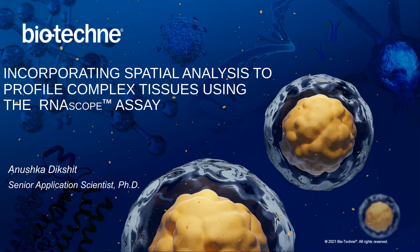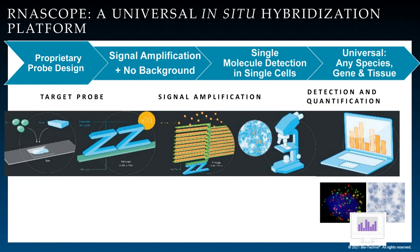Thank you for that introduction. Hello everyone. Thank you for joining us today to learn about our spatial platform which allows you to profile your target RNA with single cell and tissue context. The RNA scope technology is primarily an in-situ hybridization assay designed to overcome tedious homebrew ISH assays, which were difficult to perform and provided low to moderate quality results with very nonspecific signal. We designed this technology to bypass those cumbersome processes and provide a highly streamlined, simple platform with a high signal-to-noise ratio that allows you to visualize your RNA biomarkers.